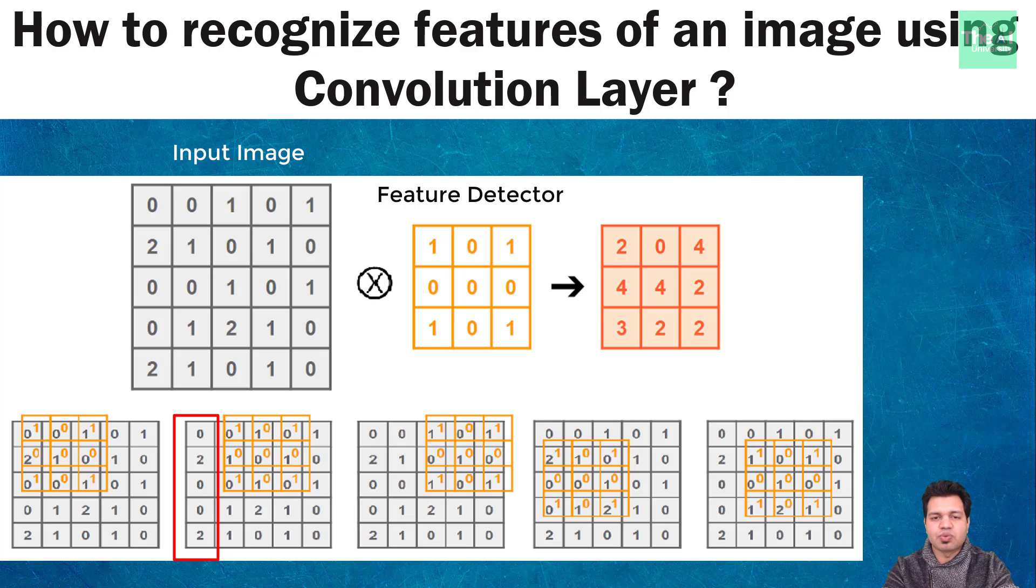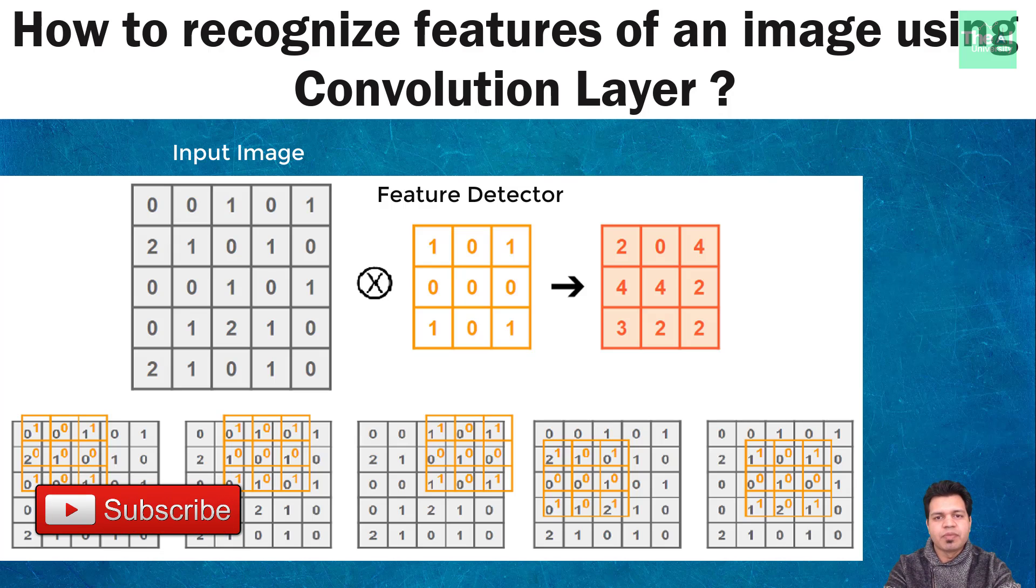If the stride is one then image will be reduced a bit and if you have stride of two then your image will be reduced some more. So basically feature detector repeats this process of moving from left to right for every location it slides over thereby converting a 2D matrix of features into another 2D matrix of features having reduced size of that image.